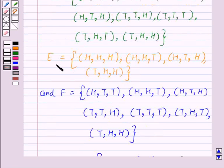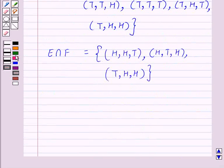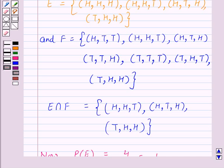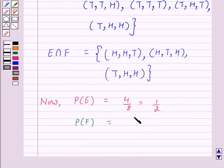Now E has 4 elements and the sample space S has 8 elements. So the probability of E is equal to 4 upon 8, which is equal to 1 over 2. And the probability of F is 7 upon 8, and probability of E intersection F is equal to 3 upon 8.